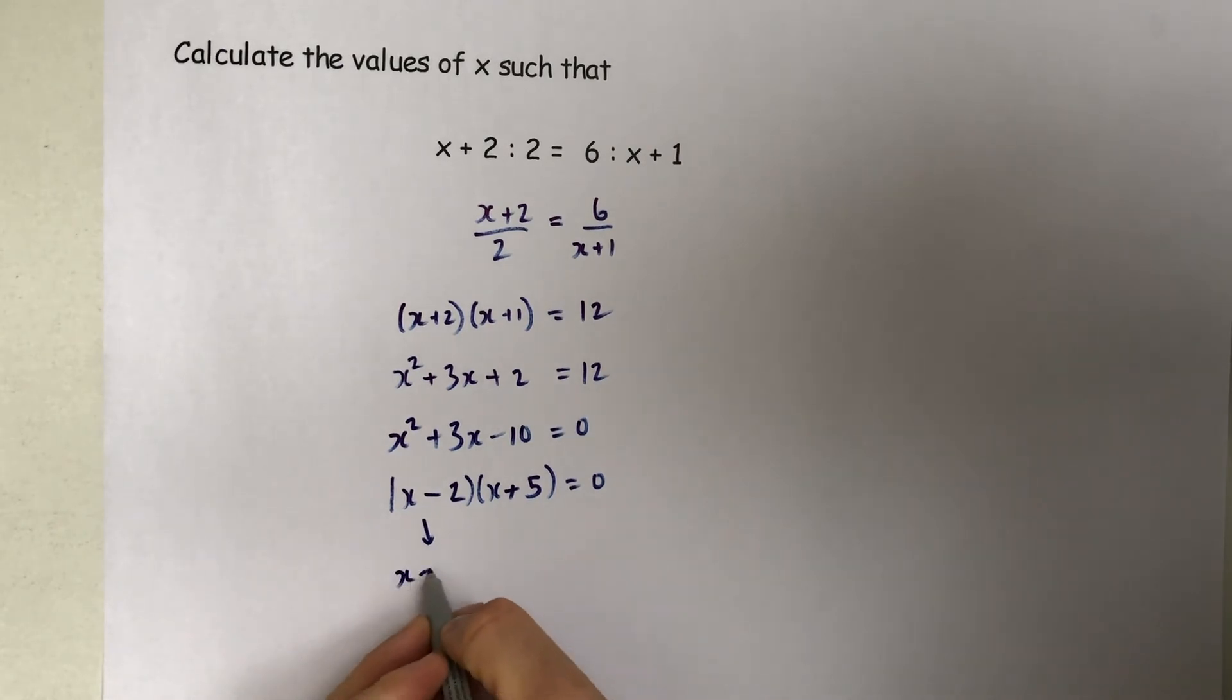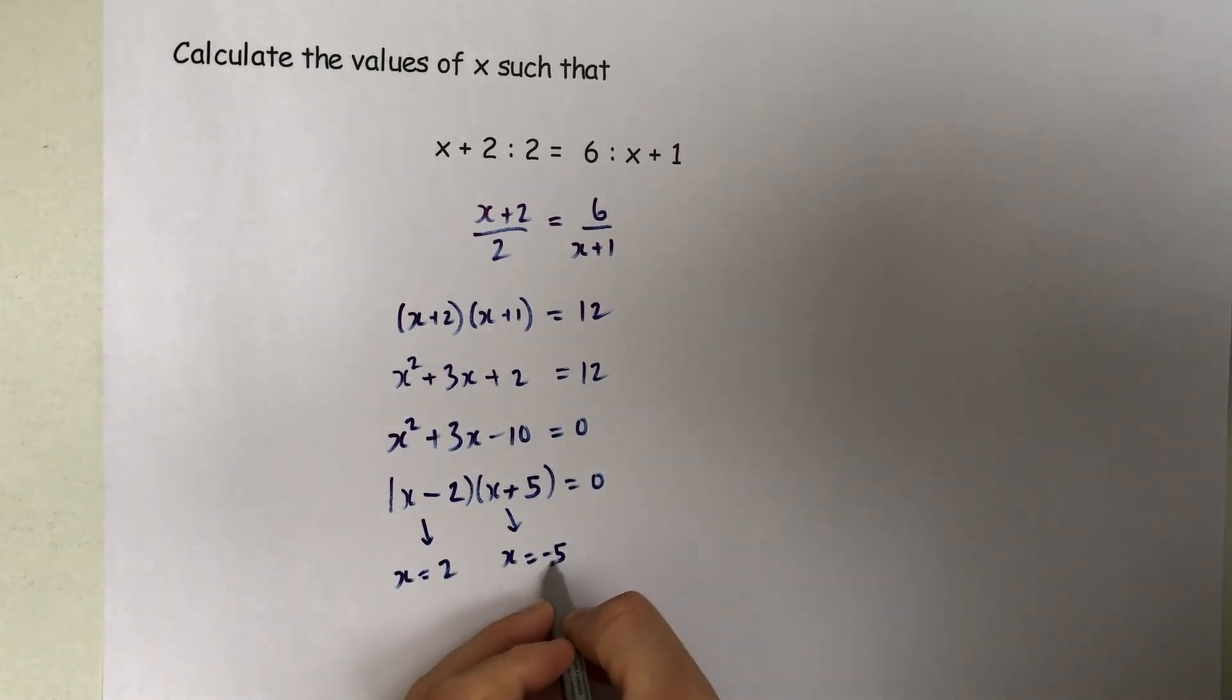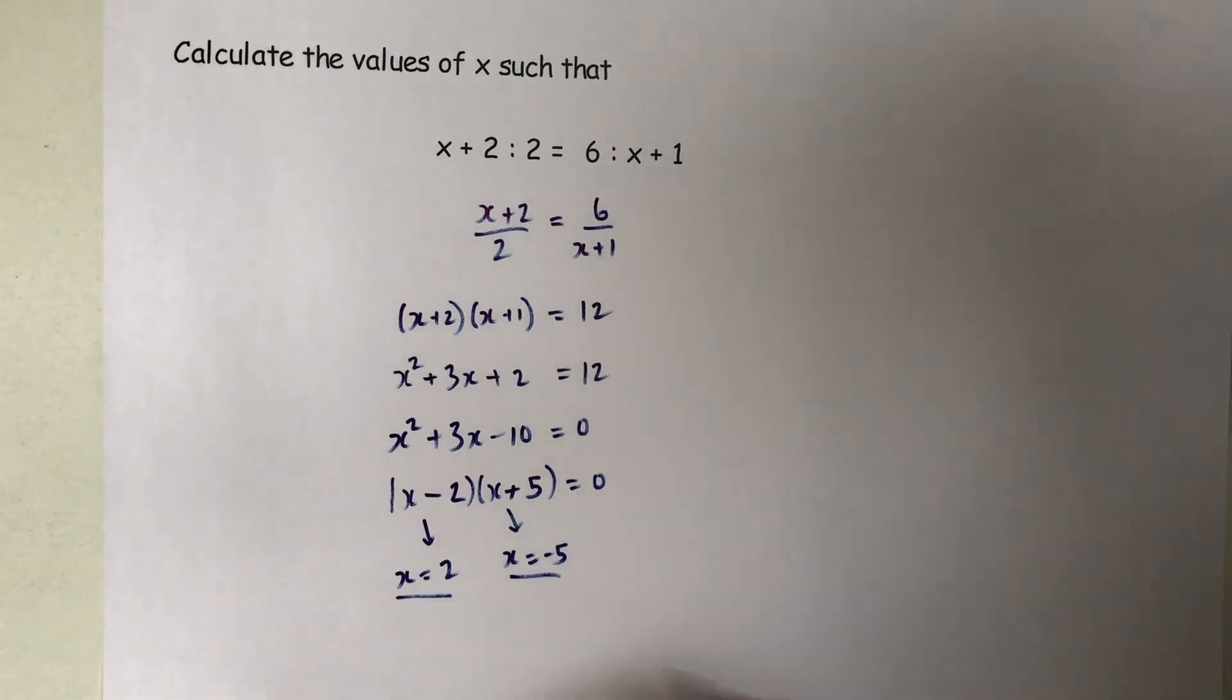So that produces the answer 2, and that bracket produces the answer minus 5. And there's our two answers.